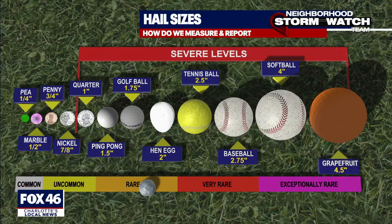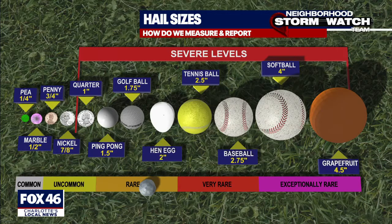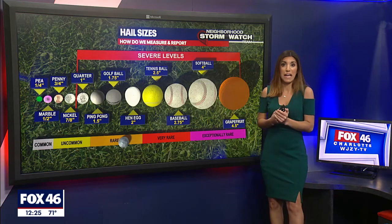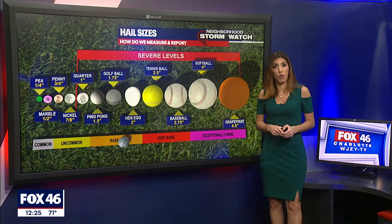The stronger that updraft is, the stronger the thunderstorm is — imagine a wind being able to hold a ball of ice the size of a grapefruit. That's got to be an incredibly strong thunderstorm. This is how we measure hail, and how we like for you to send in reports, because we need to know relatively how big it is. This is also why we say stay away from windows — imagine an ice ball the size of a softball coming through your window.